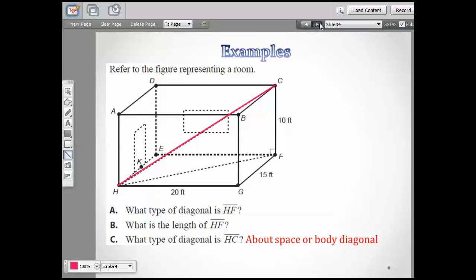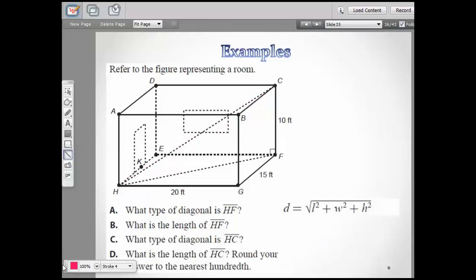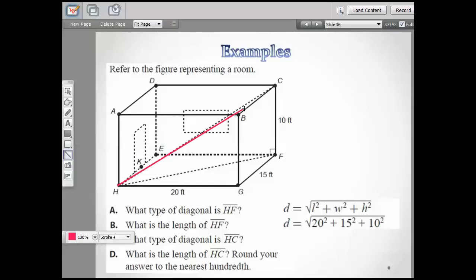What is the length of segment HC and round your answer to the nearest hundredth? Since it's a space diagonal, we're going to have to use that formula I showed you: the diagonal equals the square root of L squared plus W squared plus H squared. So you're going to plug in those numbers in here. Let's go ahead and put this. There's the diagonal we're looking for.